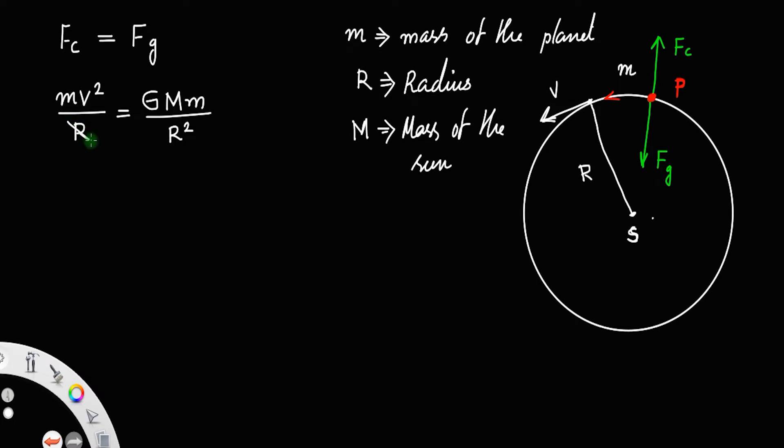So you can cancel one of the r's here, and also cancel m. This implies v squared equals GM divided by r. Let us call that equation number one.